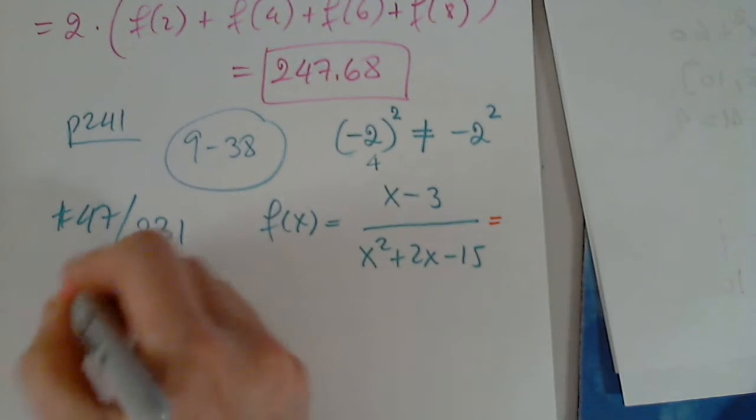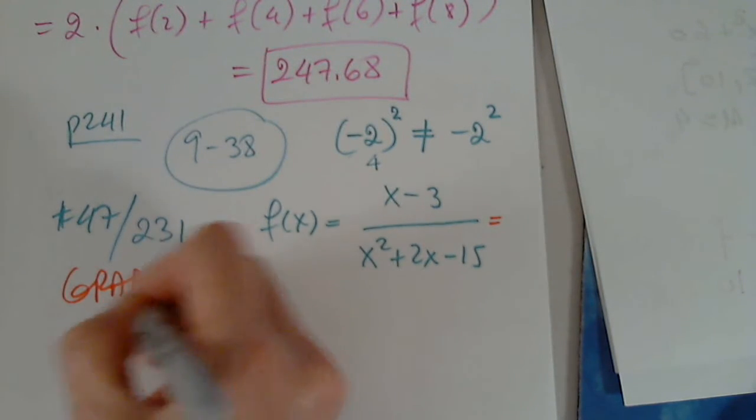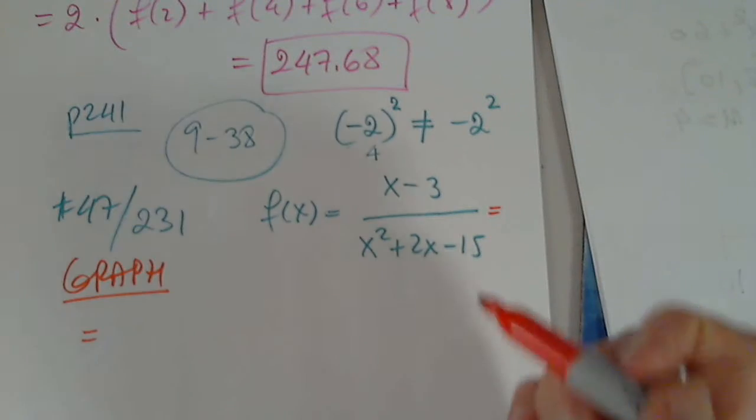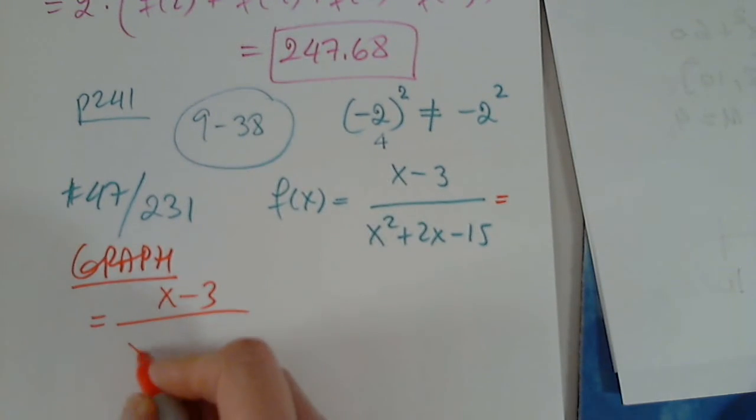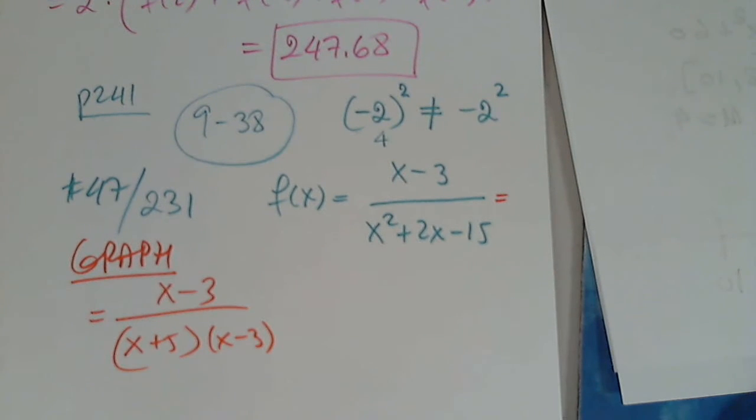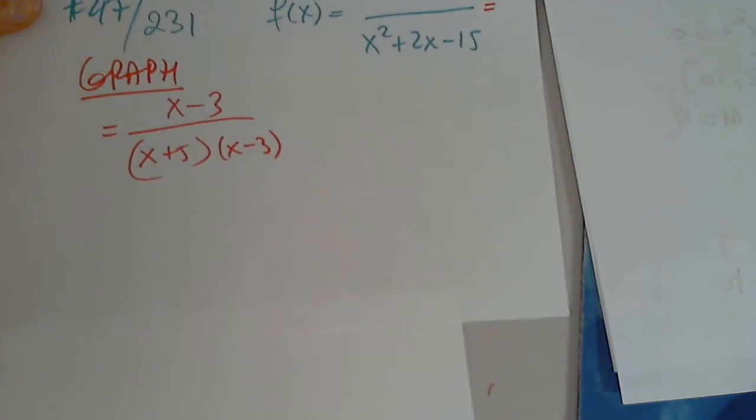Remember when we are asked to graph, so the question here is asking us to graph. So first I have to see what this denominator is all about, and I see an x plus 5 and an x minus 3. Do not rush to simplify. Definitely not before you start your table. That's very important.